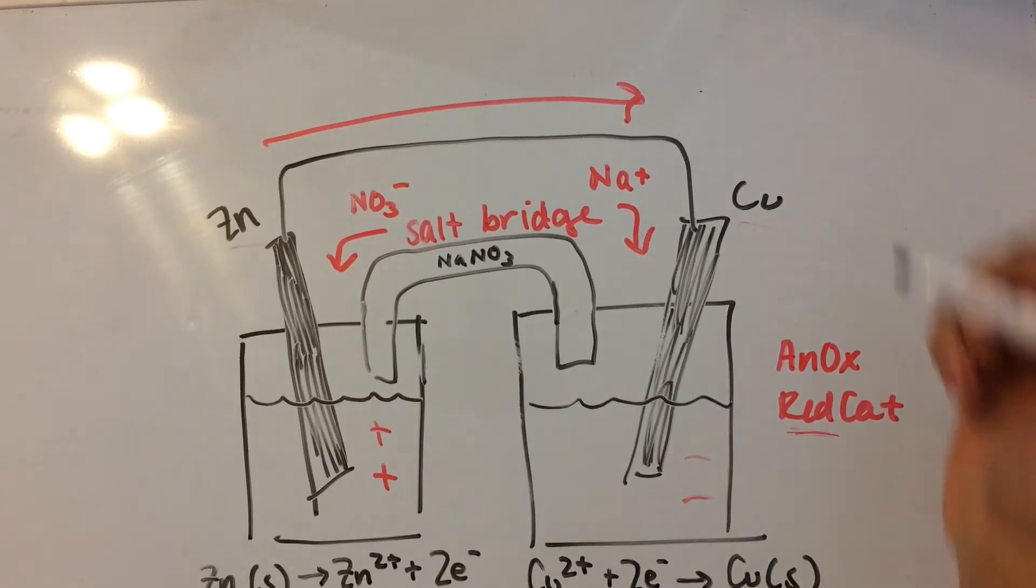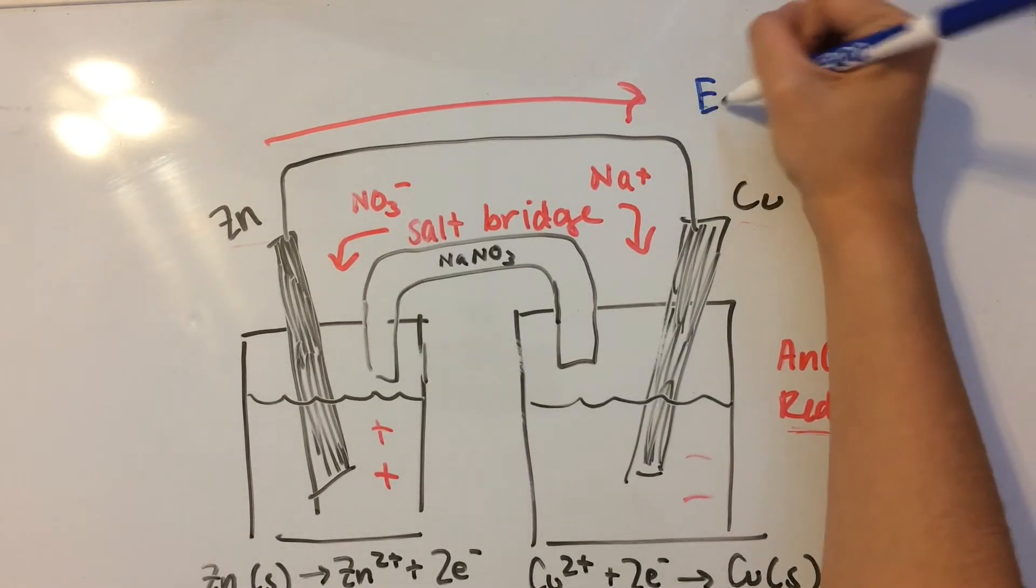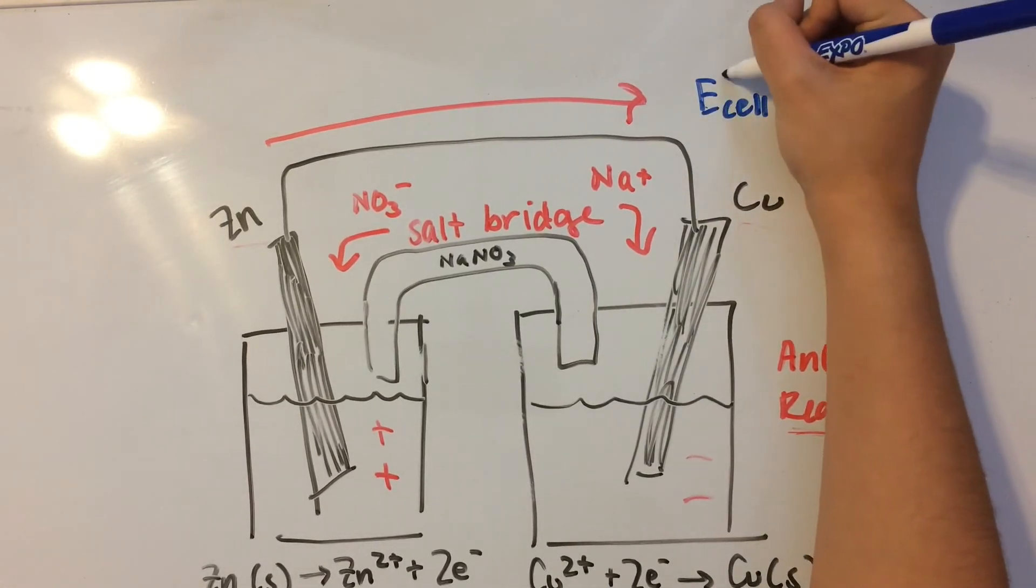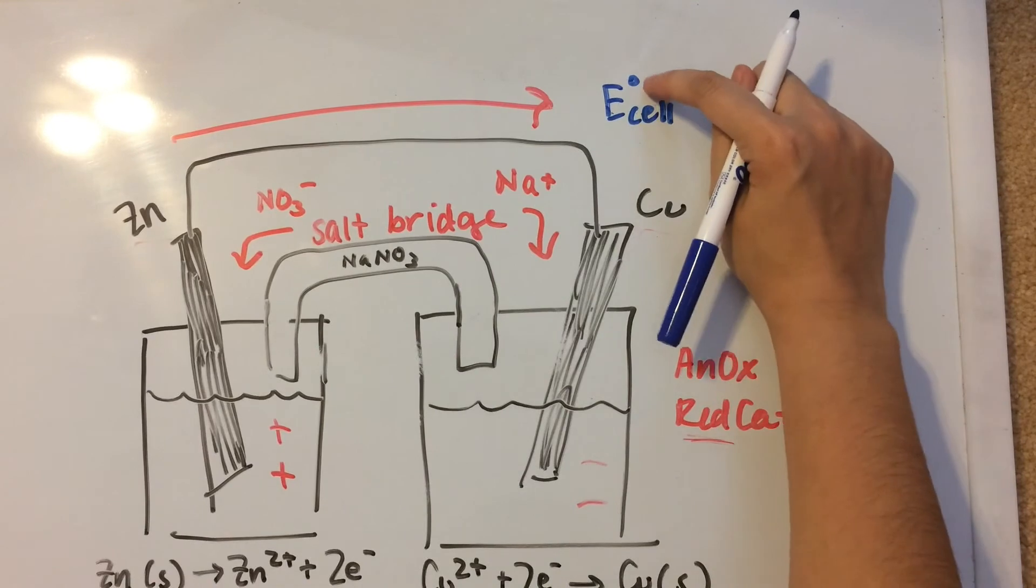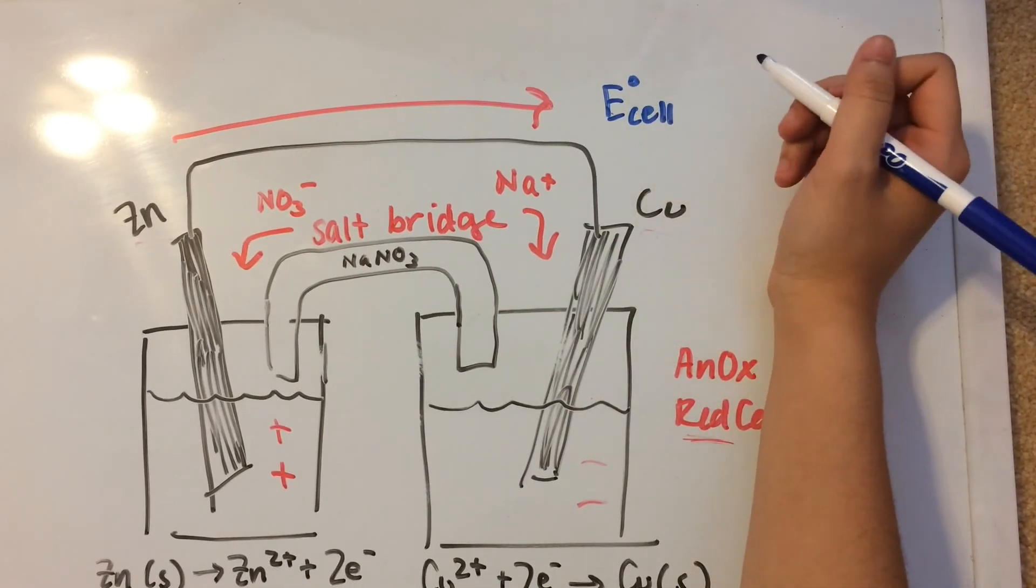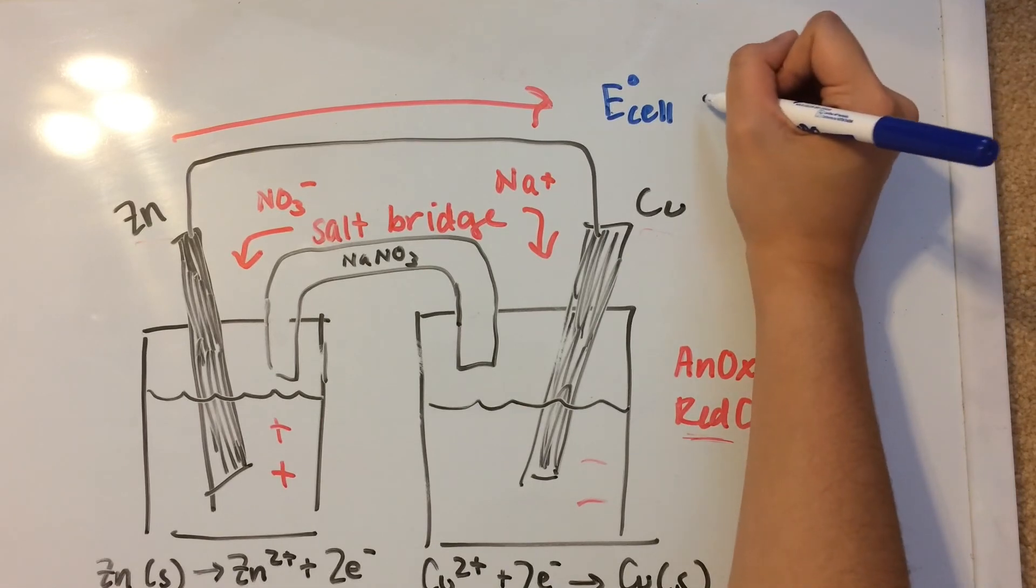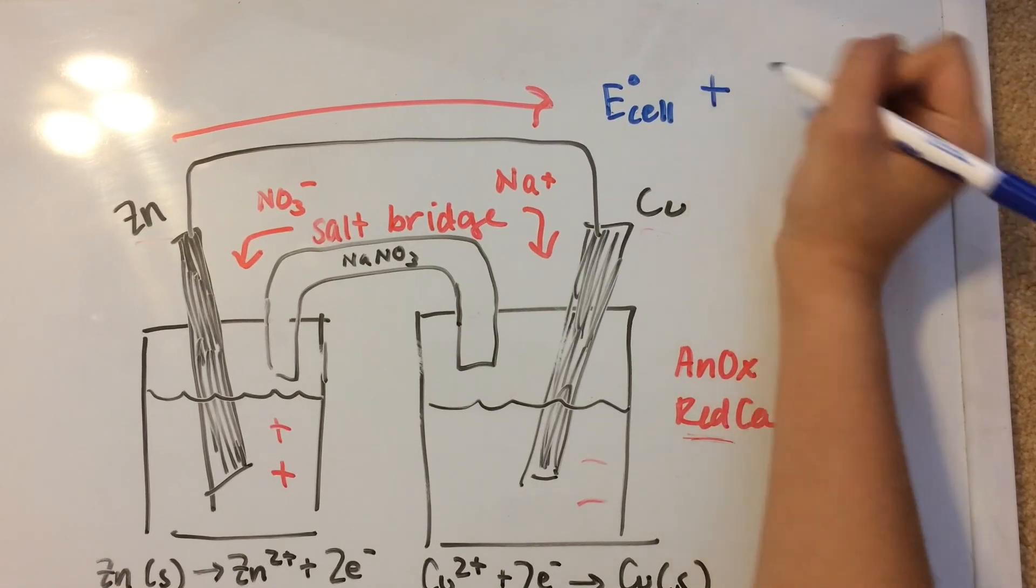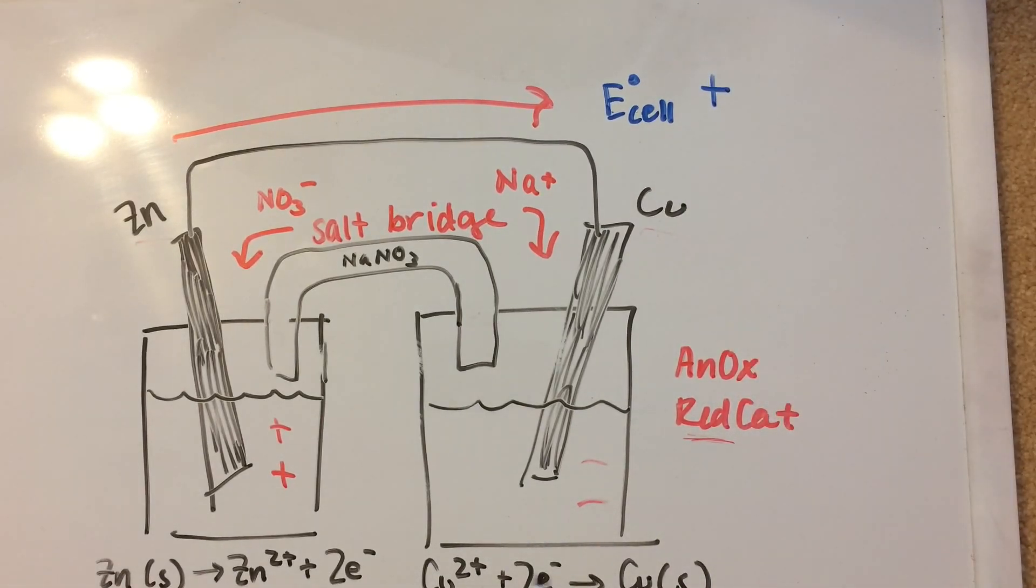There's also this thing called cell potential, which is denoted E subcell. And we put a little circle on top to denote the standard cell potential. And that's going to be positive when it's thermodynamically favorable.